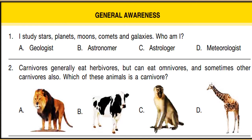Question 1: 'I study stars, planets, moons, comets, and galaxies — who am I?' Options are: geologist, astronomer, astrologer, or meteorologist. The person who studies stars, planets, moons, comets, and galaxies is an astronomer.